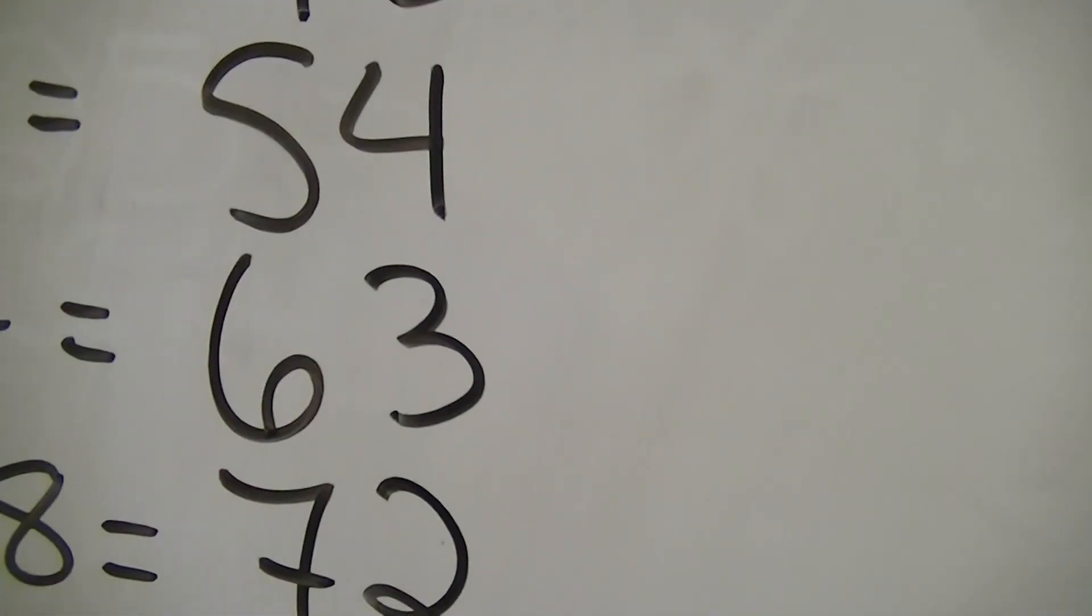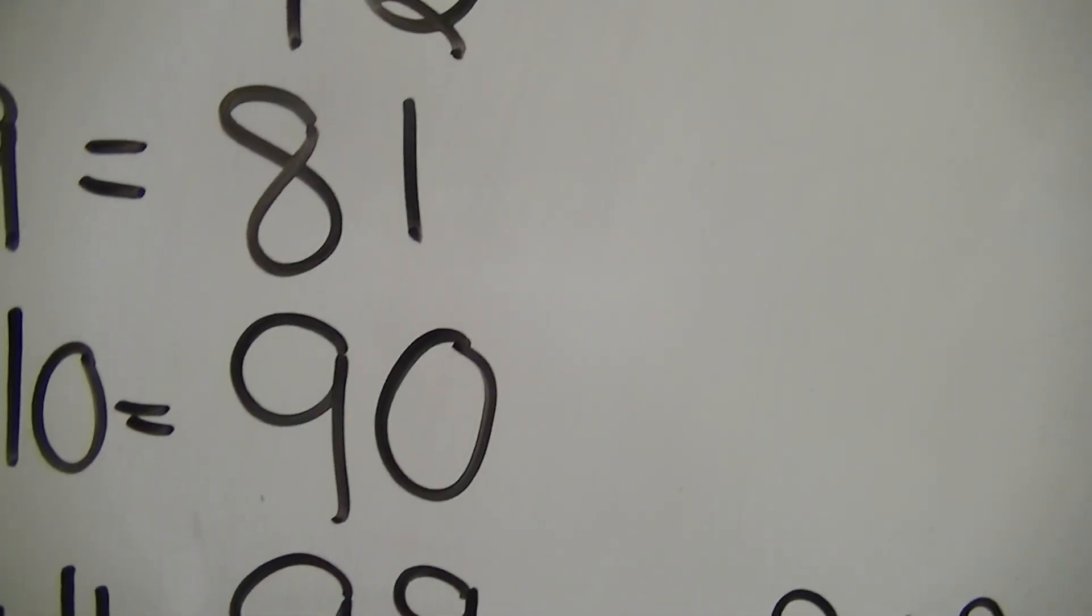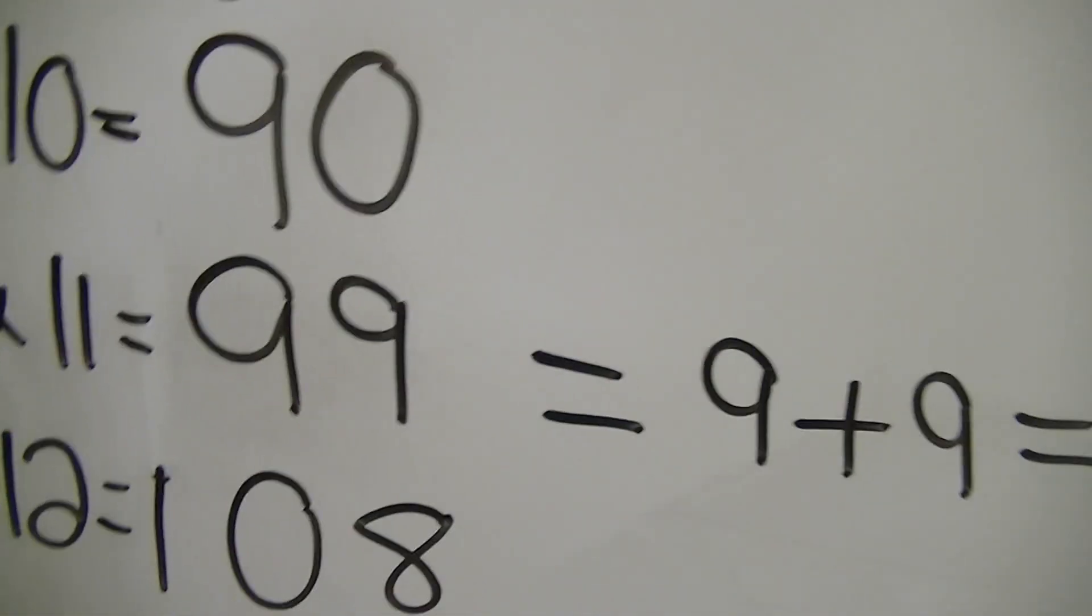Five plus four, nine. Six plus three, nine. Seven plus two, nine. Eight plus one, nine. Nine plus zero, nine. This is where it gets tricky.